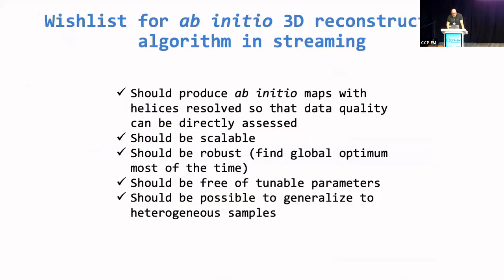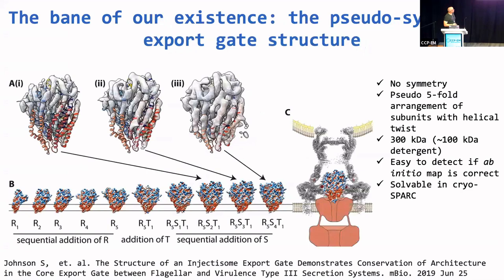And so we want to take this into 3D. We had to put together a little wish list for an ab initio 3D reconstruction algorithm for streaming. It should be able to produce ab initio maps with helices resolved so data quality can be directly assessed. We want it to be scalable to deal with increasing data rates, and it should be robust, meaning that we find the global optimum most of the time. And it should be free of tunable parameters and possible to generalize to heterogeneous samples.